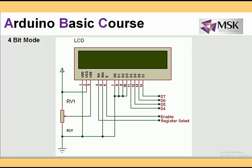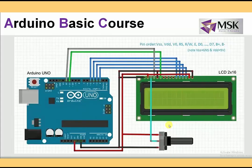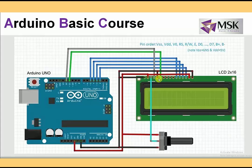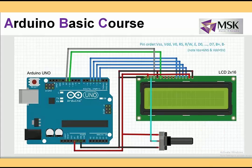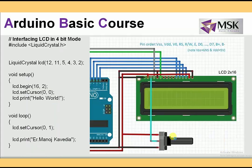Let's see the interfacing diagram in 4-bit mode. In 4-bit mode, D0 to D3 LCD pins are grounded, while D4 to D7 are connected to the Arduino. Register select and enable are also connected to the Arduino. The potentiometer is used to control the brightness and contrast of the LCD, shown as the green component in the diagram.